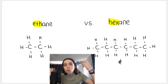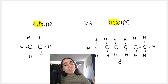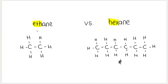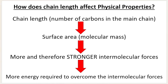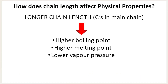If you have more London forces, you will have stronger London forces. And the stronger your London forces are, the more energy you will need to overcome the intermolecular forces. Therefore, the more energy needed to overcome the intermolecular forces, the higher your boiling points, the higher your melting points, and the lower your vapor pressure.